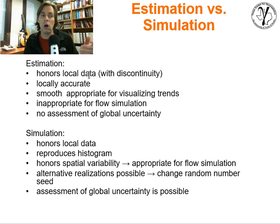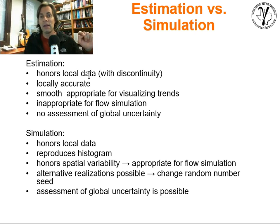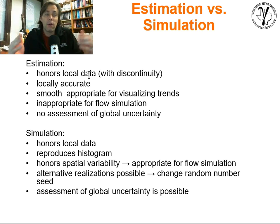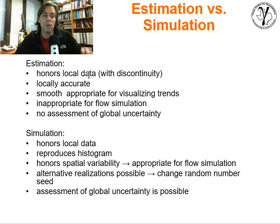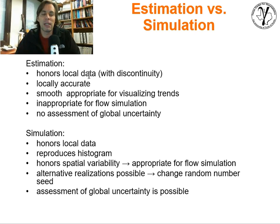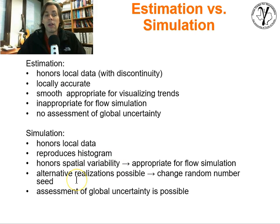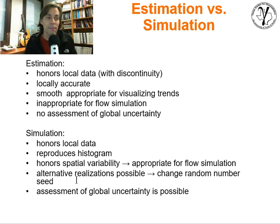Simulation: check, it honors the local data. But in addition, it actually honors the whole histogram — the entire CDF or PDF is going to be reproduced. It's also going to honor the spatial variability. Remember, variance of permeability and spread of permeability matter — Dykstra-Parsons was all about that spread. We also cared about spatial continuity; we saw that flow and recovery factors were impacted dramatically by different spatial continuities. We get the histogram and the right spatial continuity. We also get alternative realizations — just change the random number seed — to account for spatial uncertainty, and an assessment of global uncertainty is now possible.